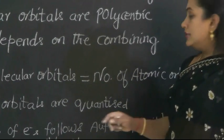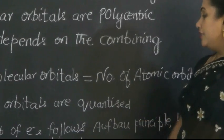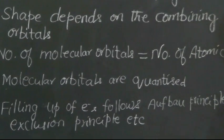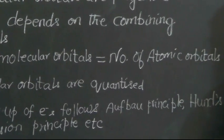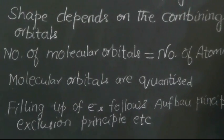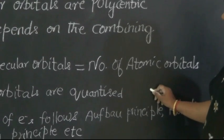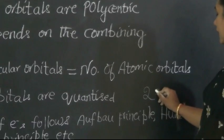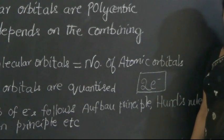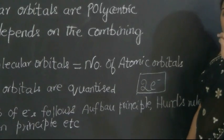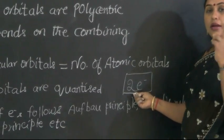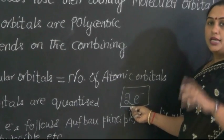The filling up of electrons in molecular orbitals happens as per the Aufbau principle, Hund's rule of maximum multiplicity, and Pauli's exclusion principle. A key point to remember is that when a molecular orbital is formed, only a maximum of 2 electrons can be accommodated in it — just as in an atomic orbital only 2 electrons can be accommodated. Even in the molecular orbital, it can accommodate only 2 electrons. That number is fixed and there is no change in it.